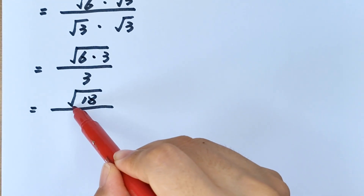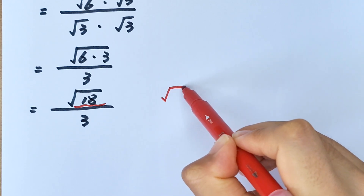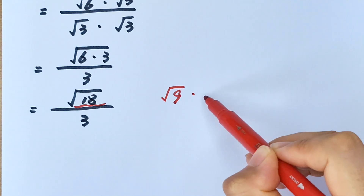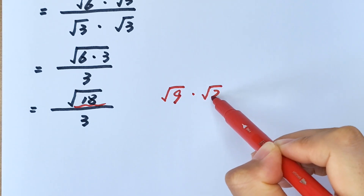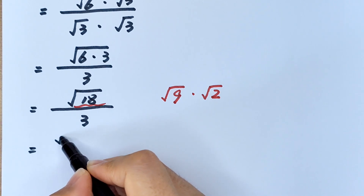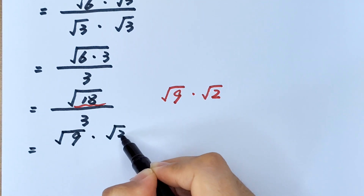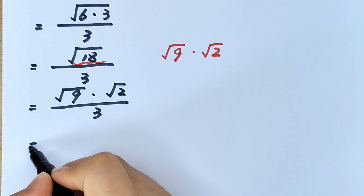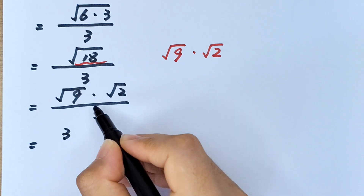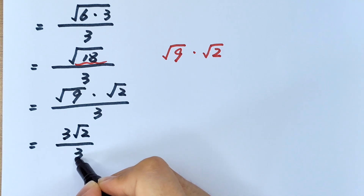Square root of 18 can be written as square root of 9 times square root of 2. So we have square root of 9 times square root of 2 divided by 3. Square root of 9 is 3, so this becomes 3 times square root of 2 divided by 3.